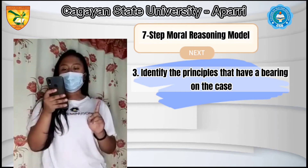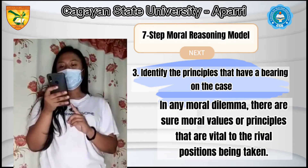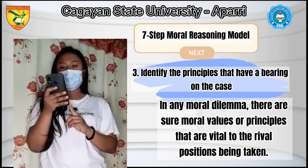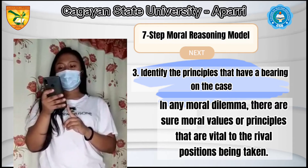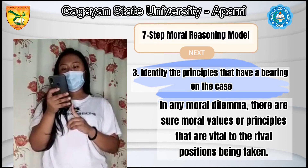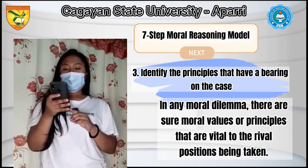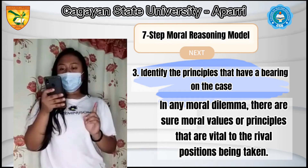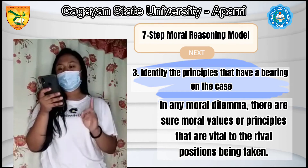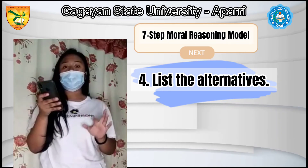Third, identify the principles that have a bearing on the case. In any moral dilemma, there are sure moral values or principles that are vital to the rival positions being taken. It is very significant to recognize these principles, and in some cases, to decide whether some principles are to be weighed more heavily than others. For example, after knowing the facts about the rumors, you go to the respective people involved and ask them what is happening, knowing their side so you can weigh their principles.